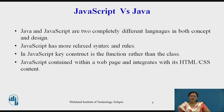Now we will see JavaScript versus Java — whether they are similar or have differences. Java and JavaScript are two completely different languages in both concepts and design. Java was developed by Sun Microsystems and is a powerful and more complex programming language. JavaScript has more relaxed syntax and rules, with fewer and looser data types.